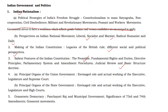Then principal organs of the Union government. Significance of the 73rd and 74th amendments and the status of grassroots movements.